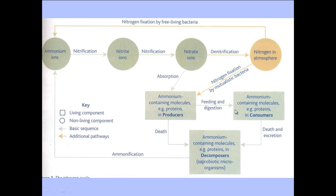Some of the arrows we have here: feeding and digestion shows which direction the nitrogen is going — in this case from the producer to the consumer, so this is where animals are physically eating the plants. Then we have death and excretion, which we have gone through, and this part here relates to decomposers and saprobiotic microorganisms.